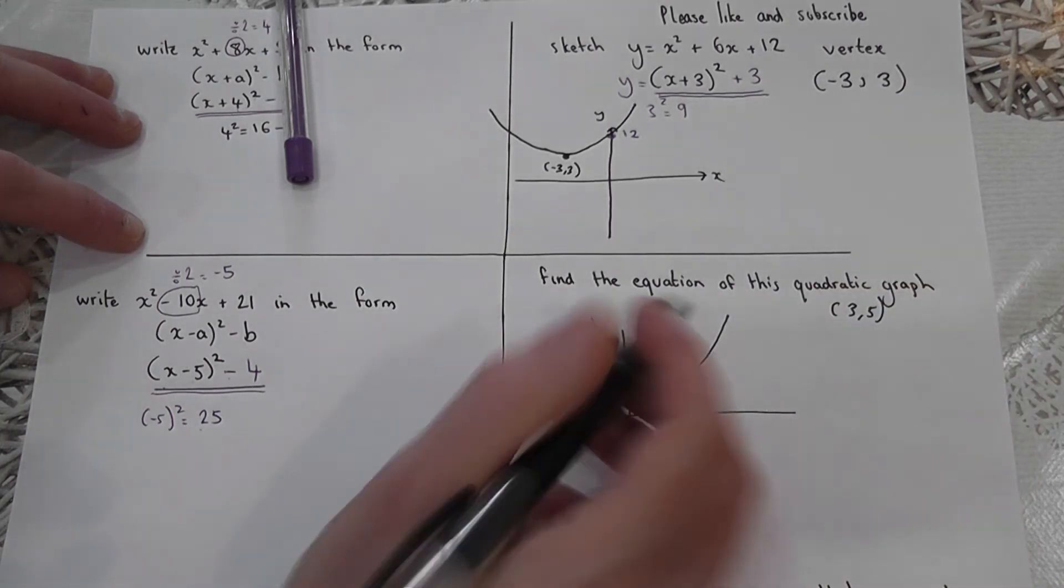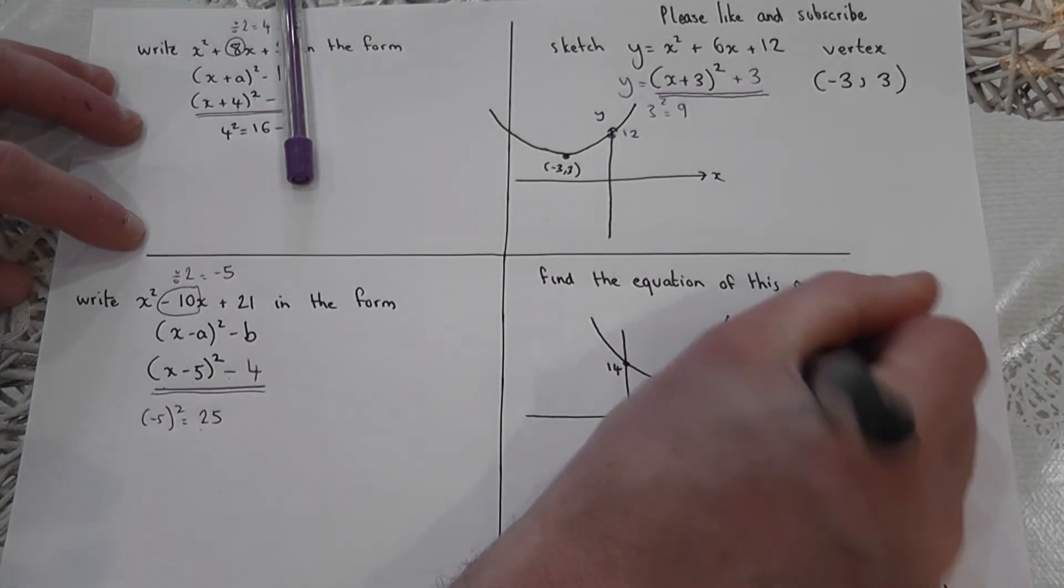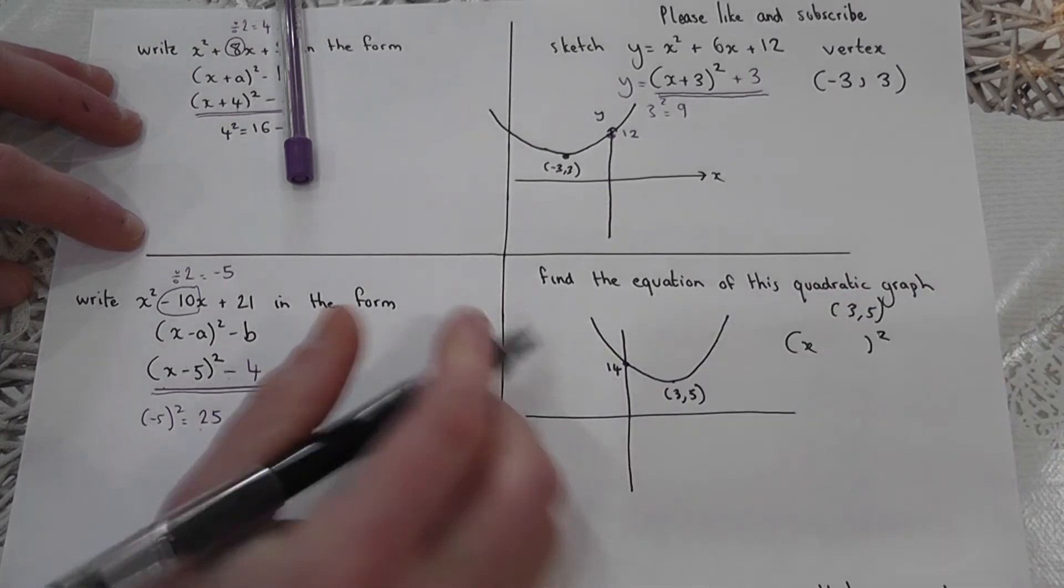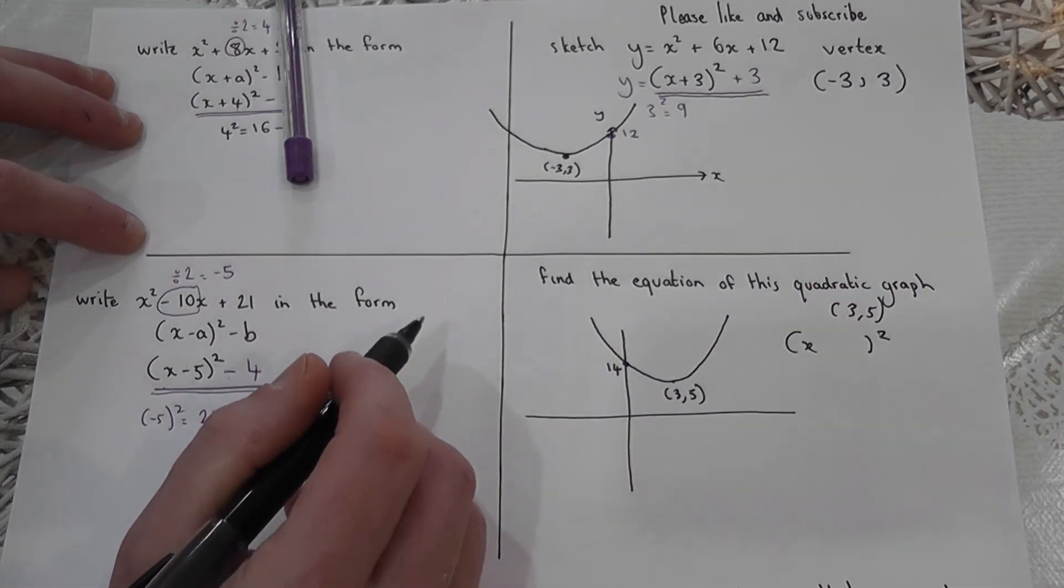So it's of the form x-something squared. Here's what I do. I always change the sign of the first number.